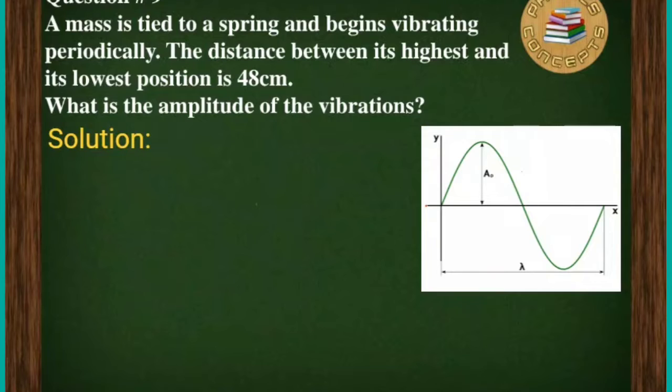the total distance from both peaks is given to us. That is 48 cm from the highest to the lowest. So the total distance is basically given to us, that is 48 cm.